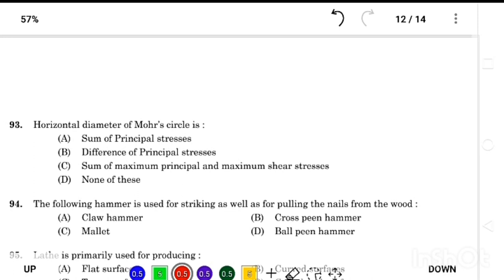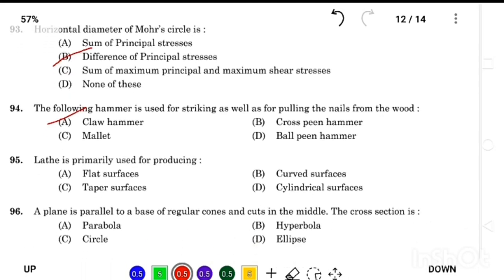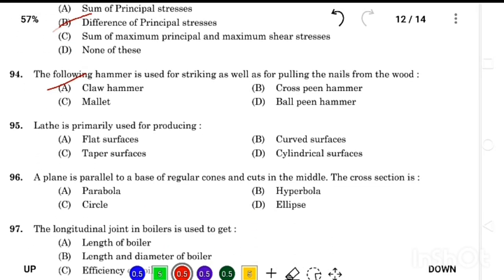Horizontal diameter of Mohr's circle is Answer Option B, difference of principal stresses. The following hammer is used for striking as well as for pulling the nails from the wood, Answer Option A, claw hammer. The lathe is primarily used for producing Answer Option D, cylindrical surface.